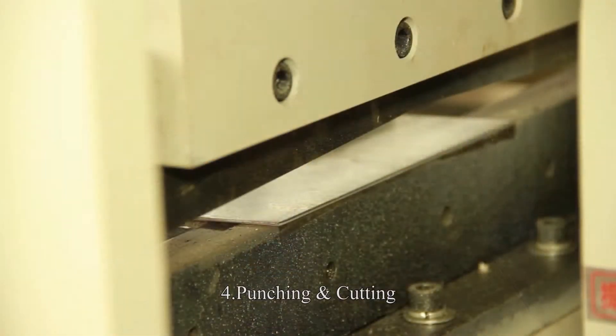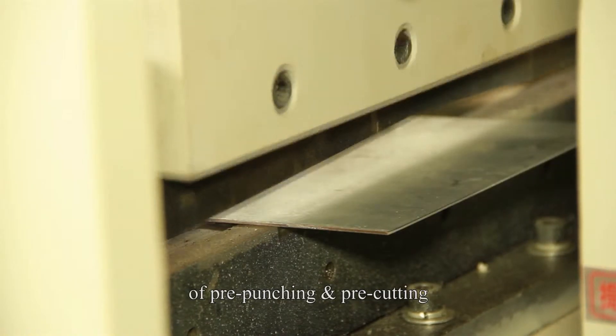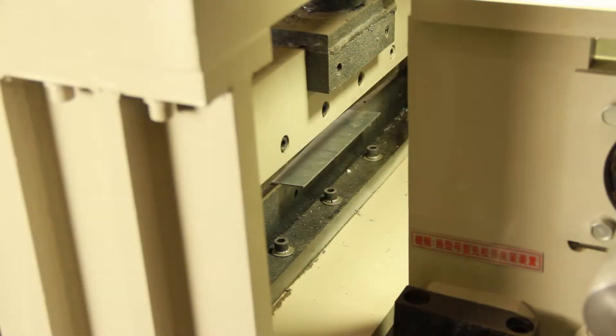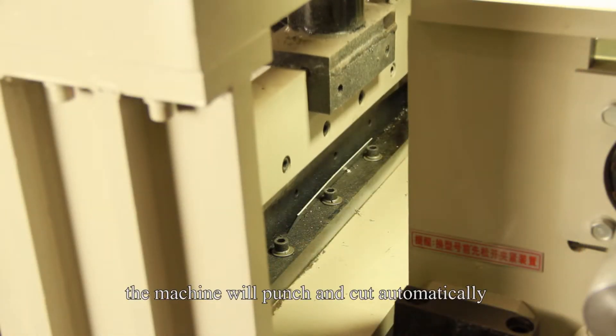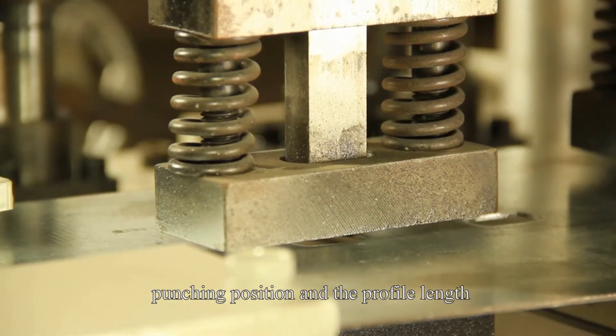Number 4: Punching and Cutting. When the material reaches the position of pre-punching and pre-cutting, the machine will punch and cut automatically according to the preset punching position and the profile length.